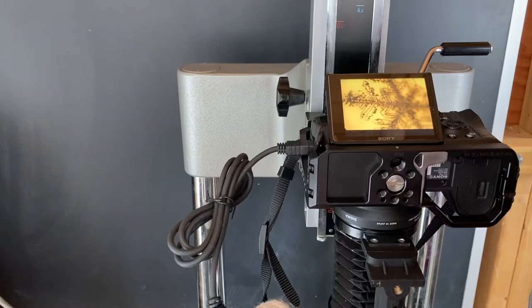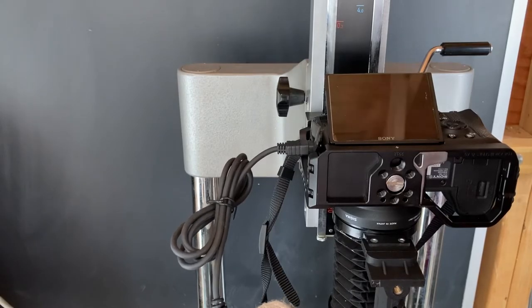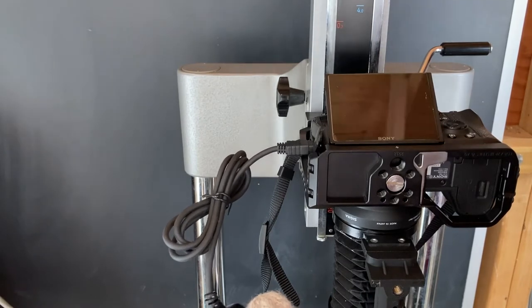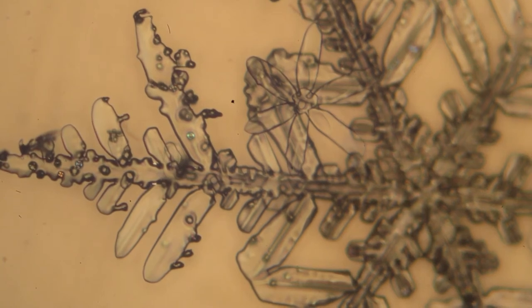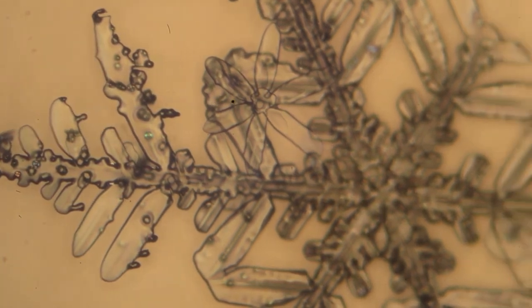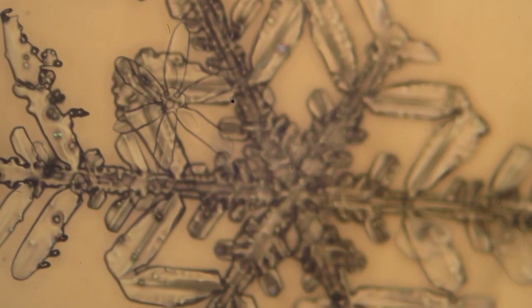So what I'm going to do is I'm going to take a bunch of pictures and then I'll combine those, each with a different depth, and then I'll get one snowflake in really good focus all the way across.